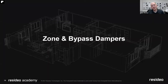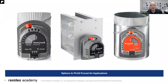We talked about our zone panels and the family — what panel you need for what job. Let's talk about what actually makes that system work: our zone and bypass dampers. Here I've pictured a couple of our dampers — on the right is our bypass damper. Some of our dampers can be used as normal zone dampers or bypass, and we really have a damper to fit any need or any job.